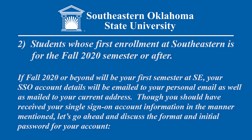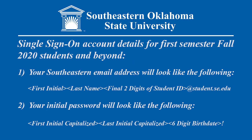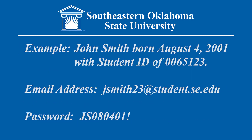For students whose first semester is the fall 2020 semester or beyond, your single sign-on account information was included in an admissions packet sent via email to your personal email address, and also mailed to your current address by the Admissions and Recruitment Office. Your email address will be your first initial, then your last name, followed by the final two digits of your student ID, at student.se.edu. Your initial account password will be your first initial capitalized, your last initial capitalized, followed by your six-digit birthdate, and an exclamation point at the end.